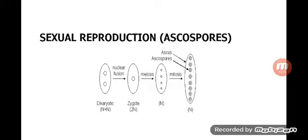Inside the ascus, the two cells first fuse to form a zygote, then the zygote divides into two to form two ascospores, then four ascospores, then eight ascospores. They contain equal numbers of positive and negative yeast cells. When the ascospores are formed, the wall of the ascus ruptures and these ascospores come out. The only difference from parent cells is their smaller size.